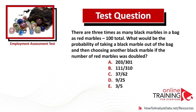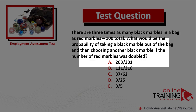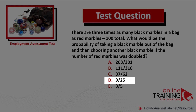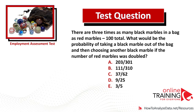Let's look at a very tricky question often used as part of advanced tests. There are three times as many black marbles in a bag as red marbles, with 100 total. What would be the probability of taking a black marble out of the bag and then choosing another black marble if the number of red marbles was doubled? You have five different choices.